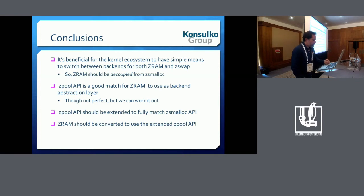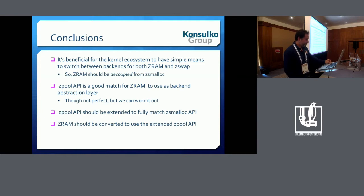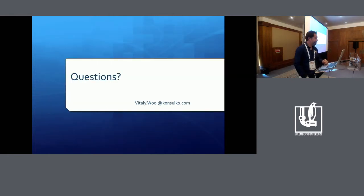Conclusions: it's beneficial to have simple means to switch between back ends, which means using a common API, which means ZRAM should be decoupled from zsmalloc. We don't have to look far for this API because zpool already exists and is a good match for ZRAM. Once done, it would be nice to have ZRAM use the zpool API and leave kernel developers and configurators the power of choice on which back end to use. Thanks for your attention.